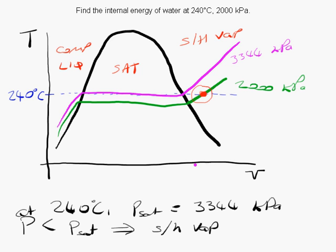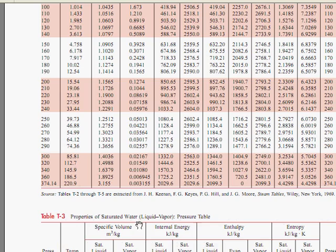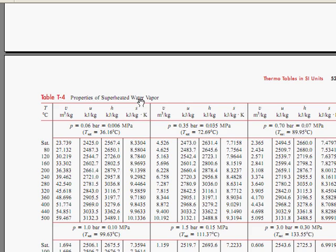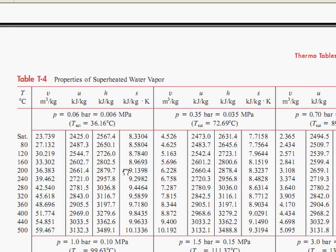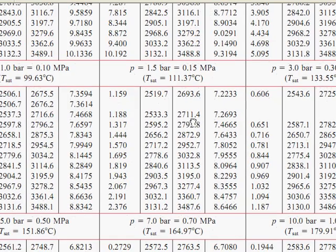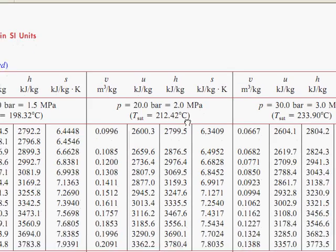So go back to our tables. Here's the superheated water vapour table. And on the superheated tables, the superheated water table is really made up of a lot of subtables. This region here, this table, is for a pressure of 0.06 bar. We've got a table here for a pressure of 1.5 bar, and so on. Our pressure is 2,000 kilopascals, which is 2 megapascals. And luckily for us, there is a table for exactly 2 megapascals.